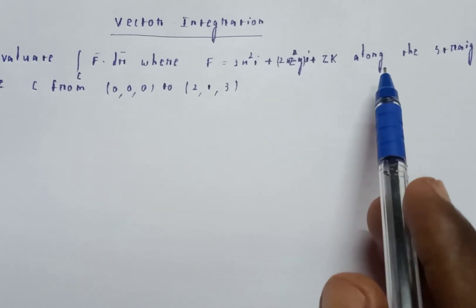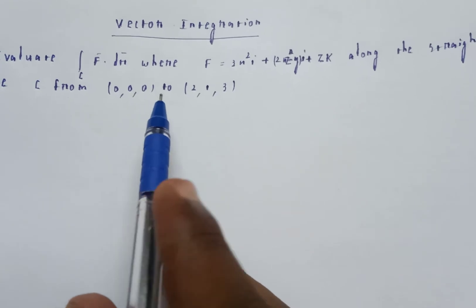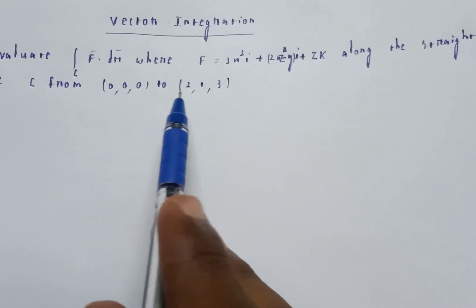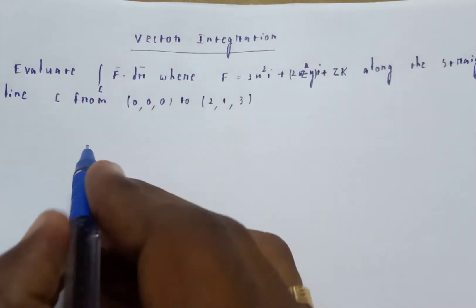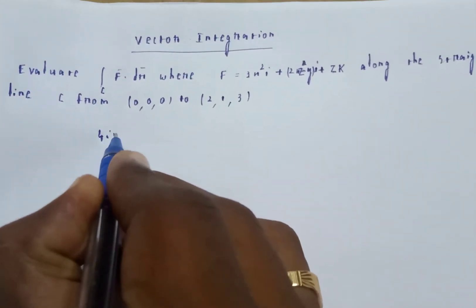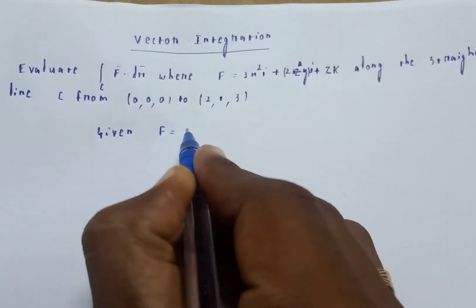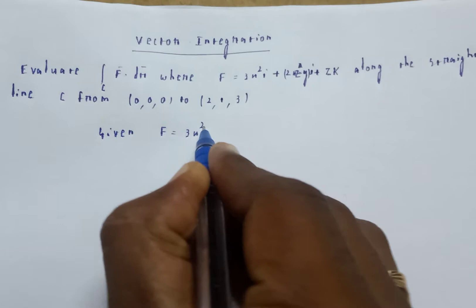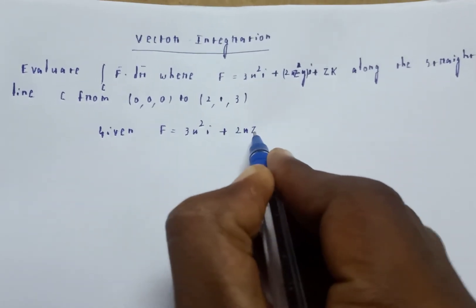y of j plus zk along the straight line from (0,0,0) to (2,1,3). In this problem, F is equal to 3x square i plus 2xz minus